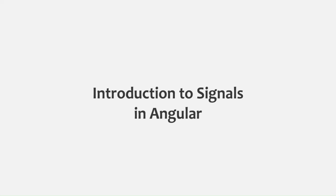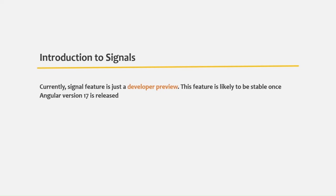In this lecture, let's try to understand what a signal is and why Angular has introduced signals. At the moment, by the time I am recording this video, signals have been introduced only as a developer preview. This feature is likely to be stable once Angular version 17 is released, but at the moment it's just a developer preview, meaning both the syntax and the feature set around signals is likely to change. Most signal-related features will be added in future versions of Angular, and patterns and best practices around signals are still to evolve.